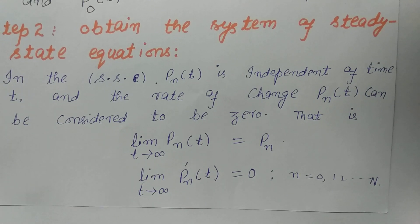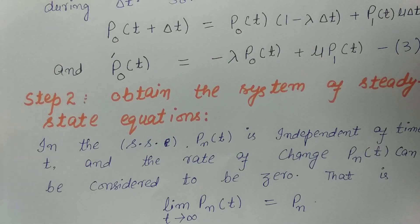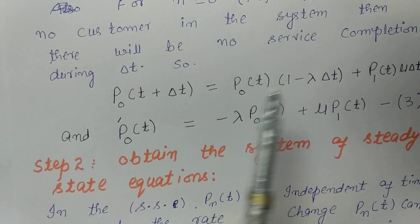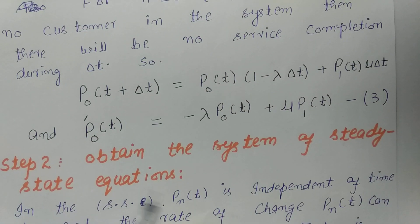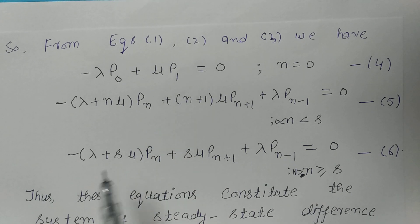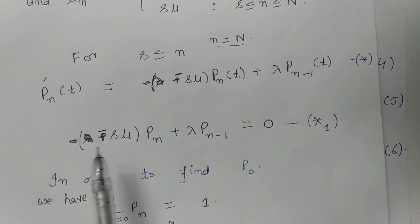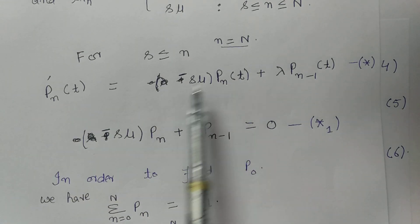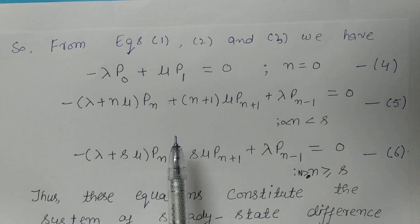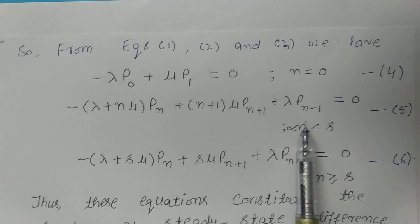Now I will put P'_N equal to 0 into Equations 1, 2, 3, and the boundary equation, making all terms independent of T. From these equations I will get the steady-state difference equations — these are the required steady-state equations.